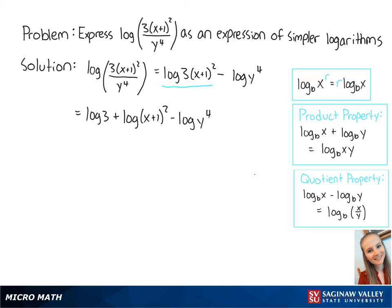Finally, we can use this last property to bring down these exponents. So this equals the log of 3 plus 2 times the log of x plus 1 minus 4 times the log of y. We cannot extend this any further, so this expression is the final answer.